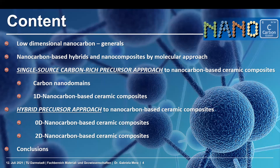I will start with a short introduction on the science of nanocarbons, and then I will explain which is our material or molecular approach in order to design nanocarbon-based materials. The first method I will mention is the single-source carbon-rich precursor approach, where a polymer is pyrolyzed to ceramics, and the carbon phase can be found in the form of carbon nanodomains, as well as one-dimensional nanocarbon-based ceramic composites. The second approach is the hybrid precursor approach, where the nanocarbon phase of different dimensionalities—zero or two-dimensional—can be incorporated directly in the molecular structure of the polymers. And of course I will end with conclusions.